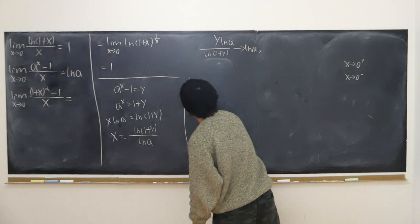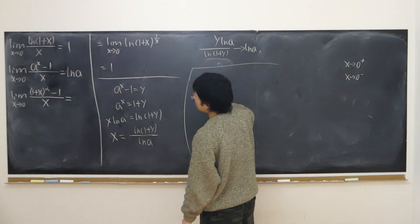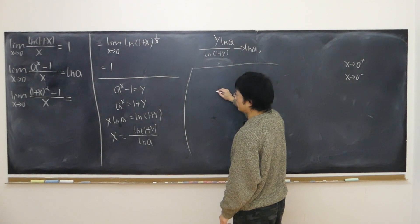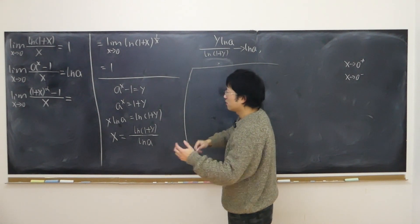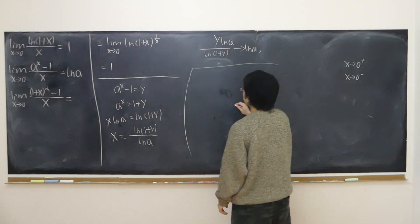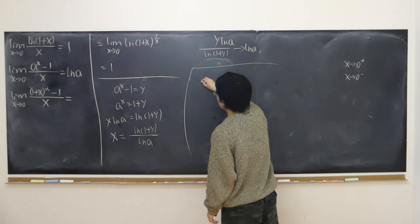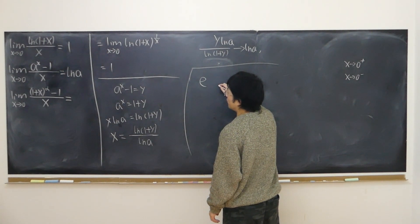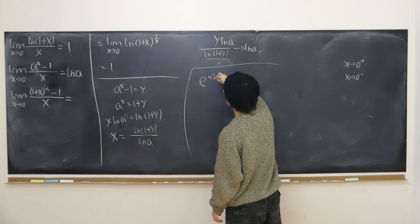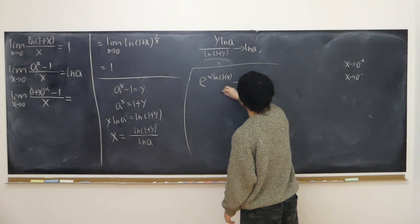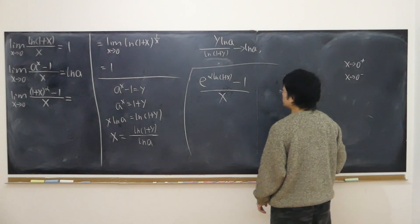Now the last limit. First of all, I'm going to change the base — here I have a base of (1 + x), and I'm going to change it into base e. It's almost like a reflex every time we deal with exponential or power functions. So it becomes e to the power of alpha times logarithm of (1 + x), with the alpha brought down, minus 1, all over x. It's still the same expression.